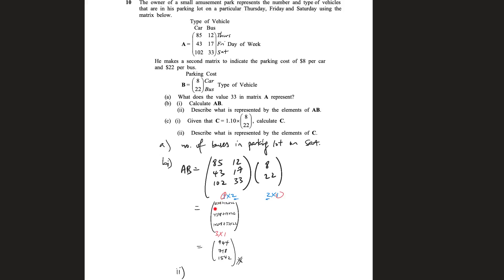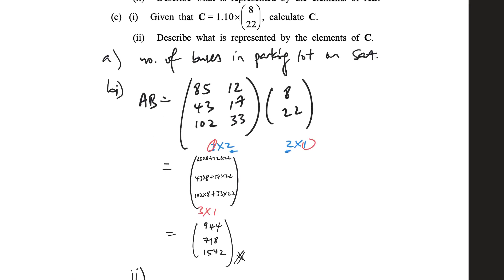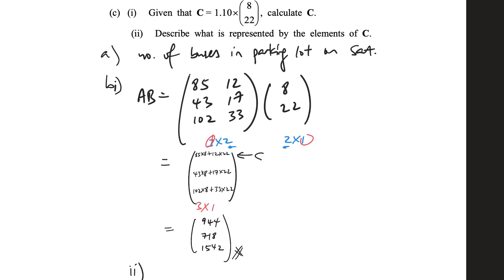So this is the total amount of money from the cars, plus 12 times 22, the number of buses on a Thursday times the amount that it costs to park one bus. So that's the total amount of money from the buses. So this is the amount of money coming in from the cars plus the amount of money coming in from the buses, add together. And this is all for 85 and 12. 85 and 12 is all for Thursday. So this is the amount of money collected on a Thursday, and this is the amount of money collected on the Friday. This is the amount of money collected on the Saturday.